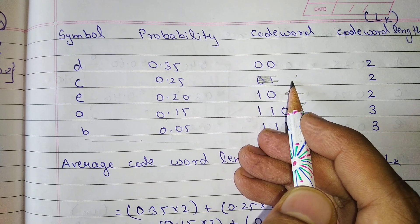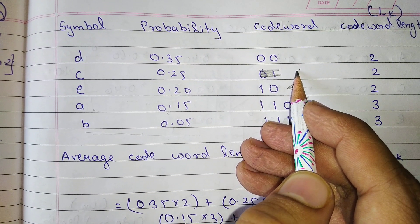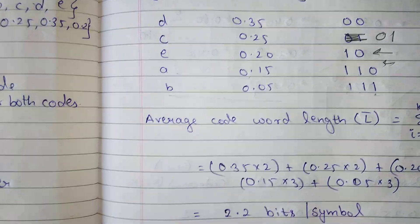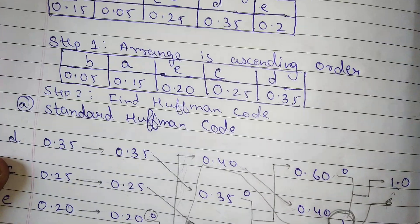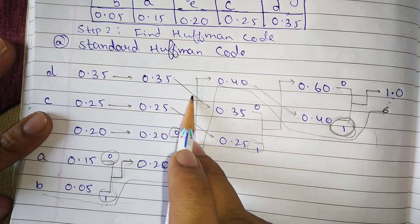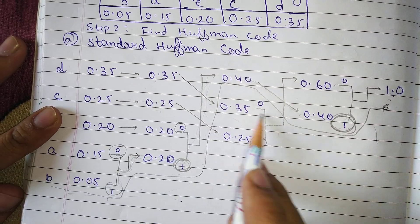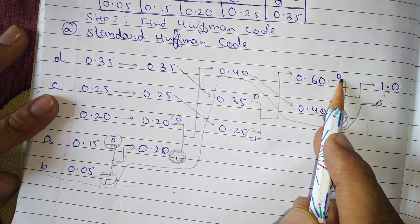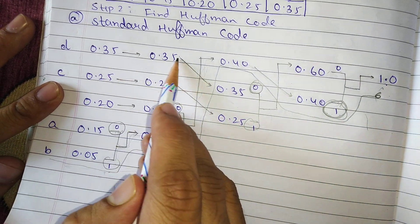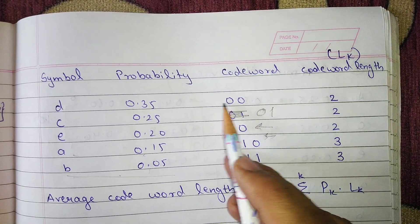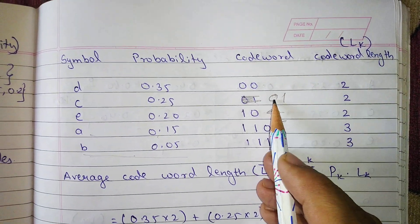The codeword for c is actually correct as written. For d: we travel the path giving 0, then 0 again, so the codeword of d is 0 0. The codeword lengths — that is, the number of bits — are: d has 2, c has 2, e has 2, a has 3, and b has 3.